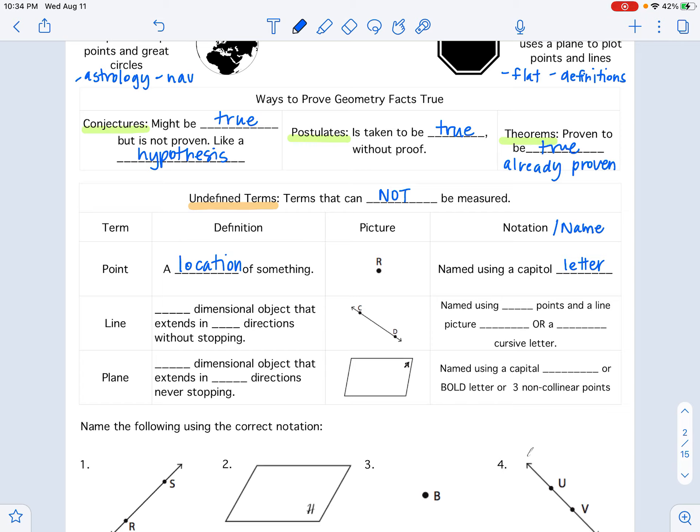A line is a one-dimensional object and it extends in two directions. So kind of like you did in algebra, a line went through all the points that you would plot and it would go on forever. It goes off into those two directions without stopping. We normally name a line using two points. Like this line over here would be CD with a line picture above like this. Or with a lowercase cursive letter.